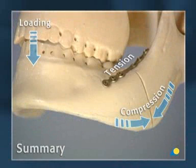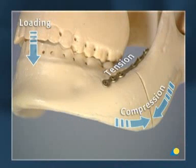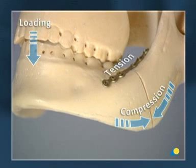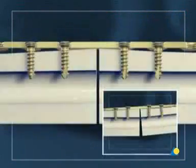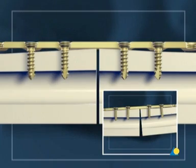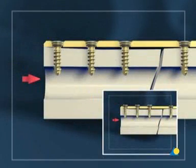This exercise has highlighted the principles of load sharing between the fixation system and the fracture surfaces in a simple transverse fracture, as described by Champy. In addition, the concept and advantages of a locking plate to help prevent primary and secondary loss of reduction have been shown.